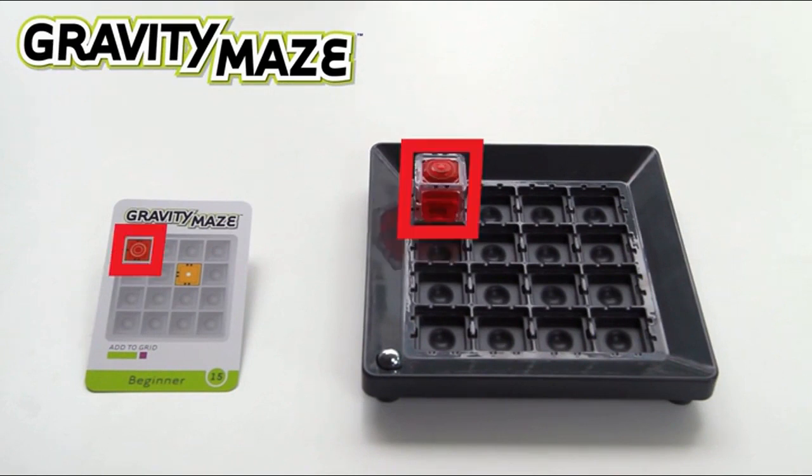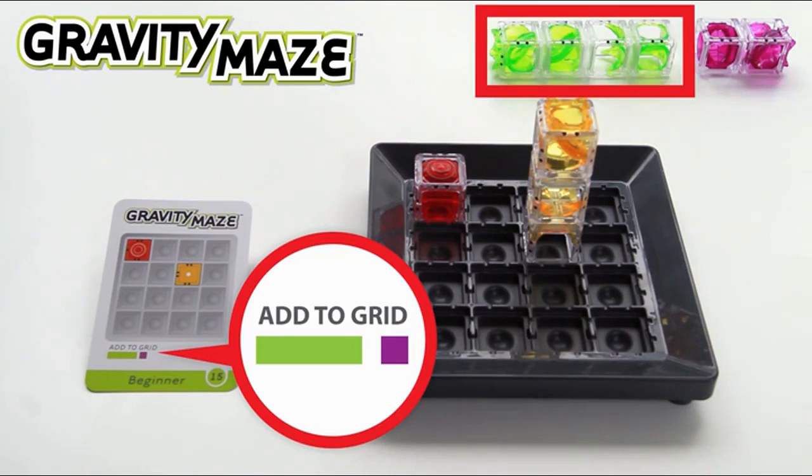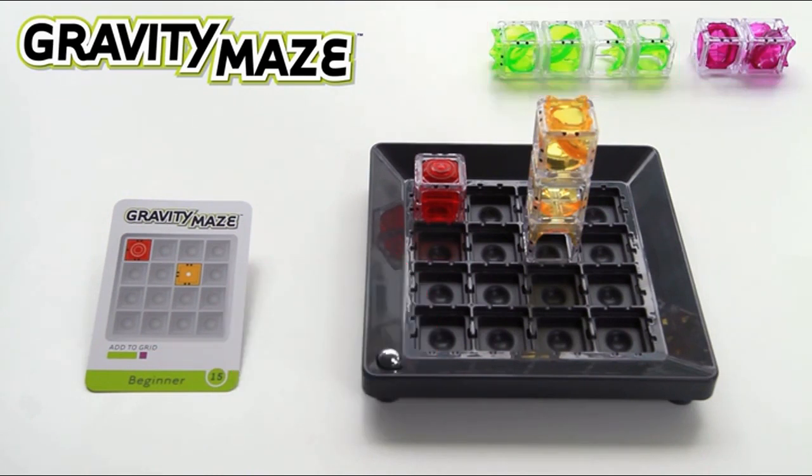Set up your grid as shown on the card and collect the towers indicated here under Add to Grid. Set aside the remaining towers. You won't need all of them for every challenge.